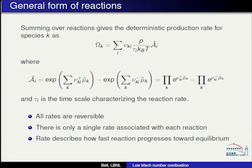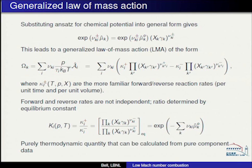Substituting in the chemical potential gives something that looks like the standard law of mass action, but with activity coefficients that modify the system. I've got forward and reverse rates linked by a constant k_i — a function of pressure and temperature — which characterizes thermodynamic equilibrium. There is one rate plus a characterization of thermodynamic equilibrium that can be computed from pure component data.